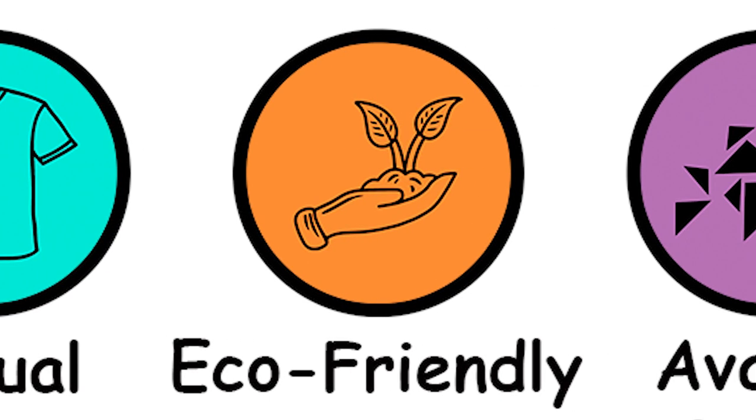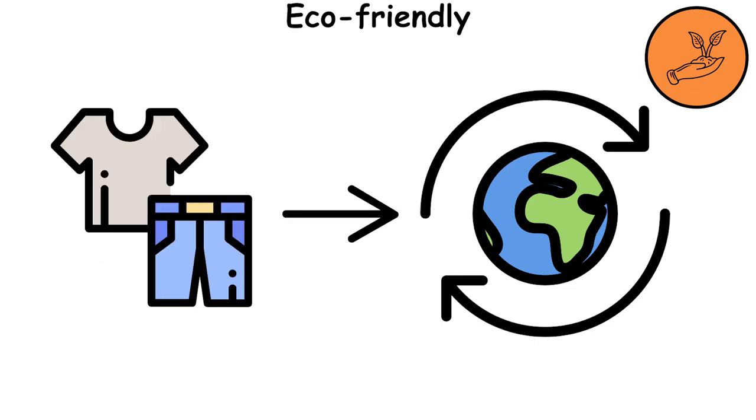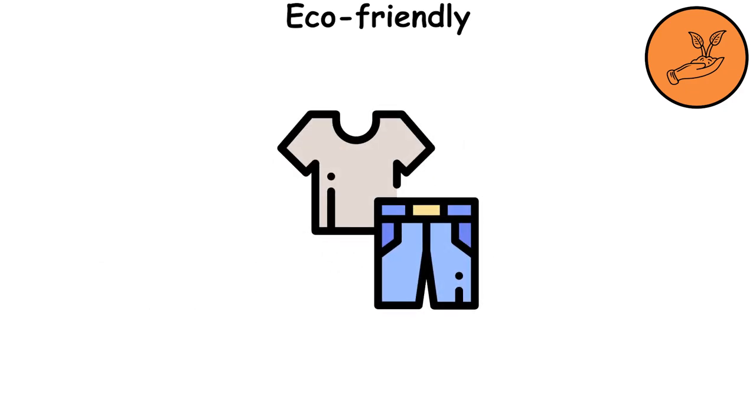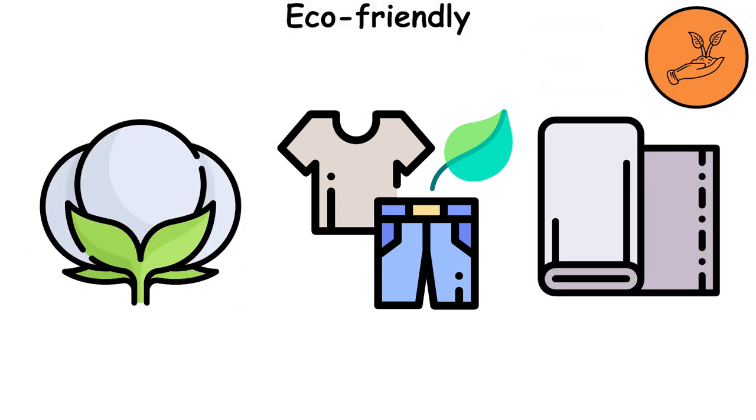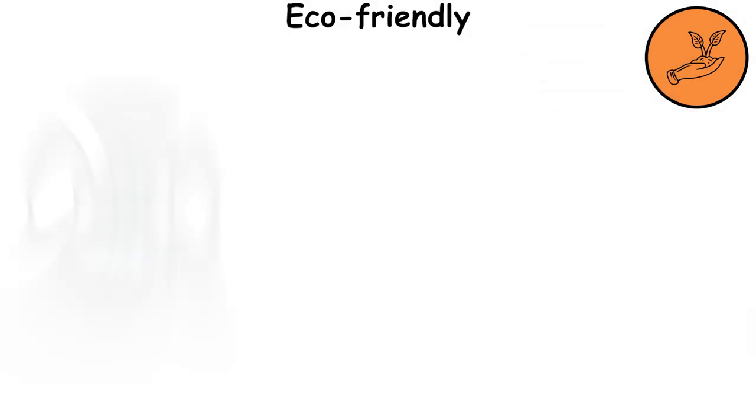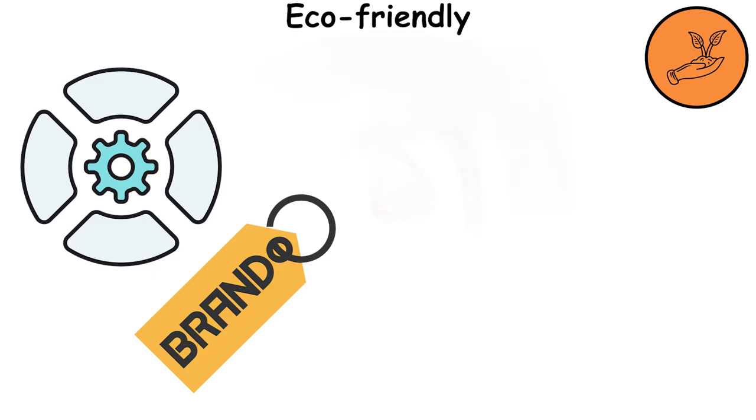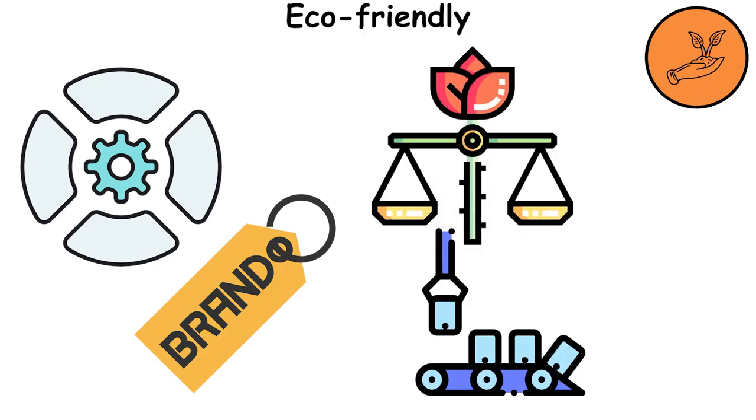Eco-friendly and sustainable fashion is about reducing the environmental impact of our clothing choices. This means choosing clothes that are made from sustainable materials, like organic cotton or recycled polyester. It's also about supporting brands that treat their workers fairly and use ethical manufacturing practices.